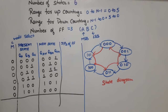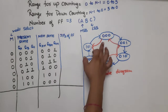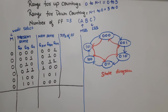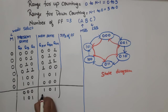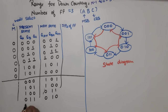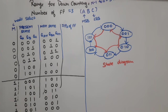Now let's see the down counting entries (M=1). Starting from 0: present state 0 → next state 5; present state 5 → next state 4; present state 4 → next state 3; present state 3 → next state 2; present state 2 → next state 1; present state 1 → next state 0. For all 6 down counting conditions, the mode select value M is 1.